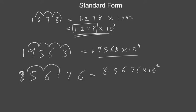If the number is already in the form 3.71 — where there's no movement needed — you write it as 3.71 times ten to the power of zero. Ten to the power of zero equals one, so this is consistent.